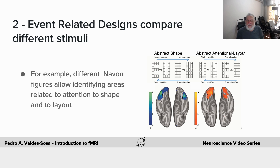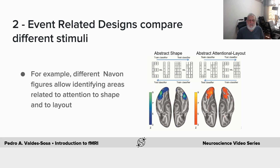By presenting these stimuli, you can ask people to give attention either to the overall shape — say whether it's an E or a U — or to pay attention to the small symbols within. These are very abstract types of attention processing. Mitchell teased out the effects related to one and the other by using these different stimuli. The essence is: you have different stimuli, take the activity around each stimulus, and compare them statistically according to their conditions — a more fine-grained approach than block design.